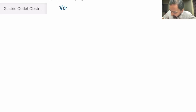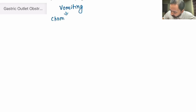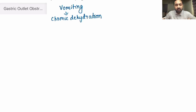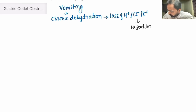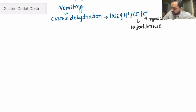Because of this vomiting, there is a phase of chronic dehydration. Now because of this chronic dehydration, there is loss of hydrogen ions, loss of chloride, and loss of potassium. This loss of potassium is going to cause hypokalemia.